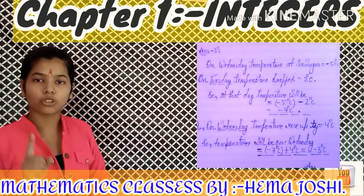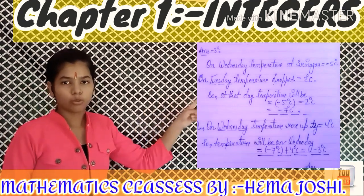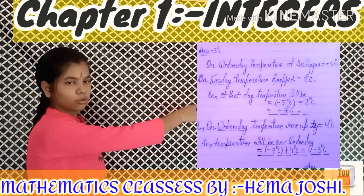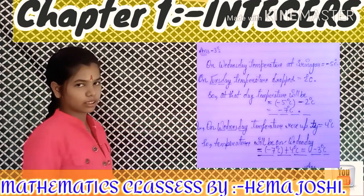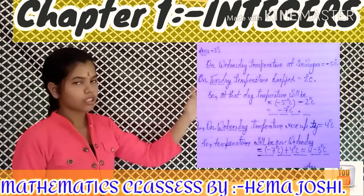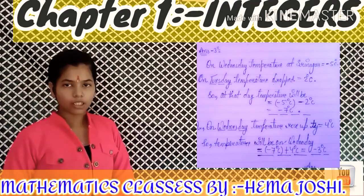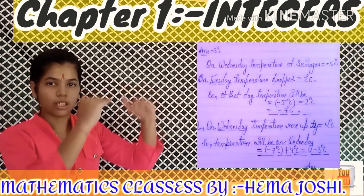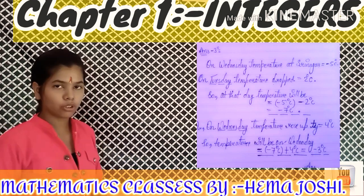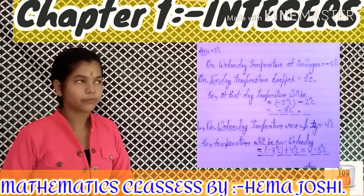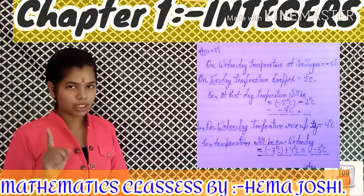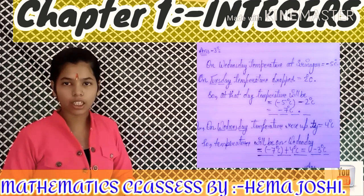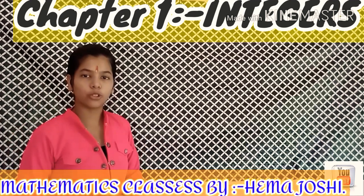In the third question, the starting temperature is minus 2 degrees Celsius. We expand by applying changes: 5 times minus 2 degrees Celsius gives minus 7 degrees Celsius after adjustments. Continuing the calculation, the final answer is minus 3 degrees Celsius.